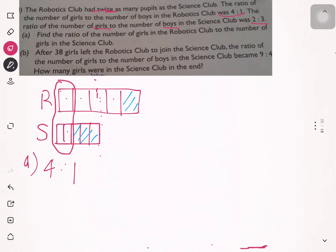The answer is 4:1. Now let's do Part B. After 38 girls left the robotics club to join the science club, the ratio of girls to boys in the science club became 9:4. How many girls are in the science club in the end?